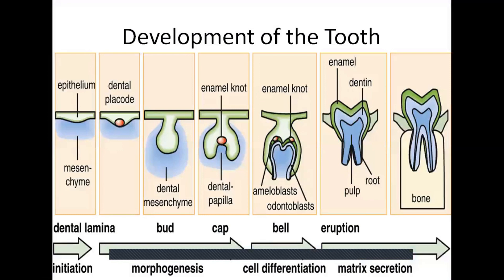The development of the tooth has various stages. Broadly it is classified into the bud stage, the cap stage, the bell stage, and then eruption. The first stage is also known as initiation. Initiation occurs at six weeks of embryonic life.